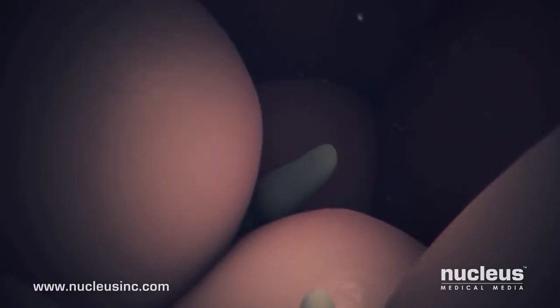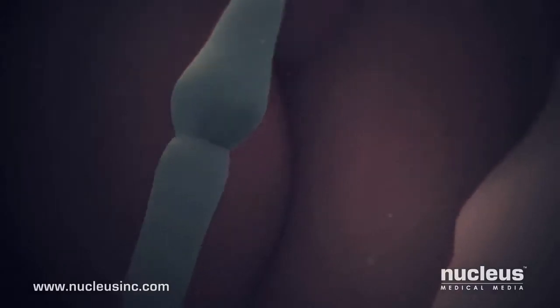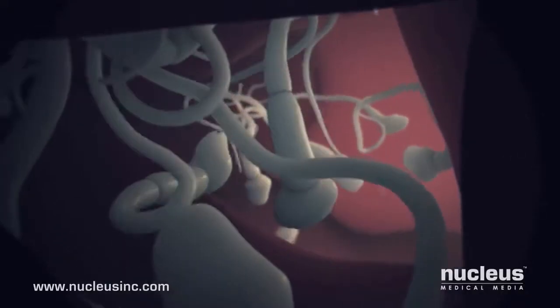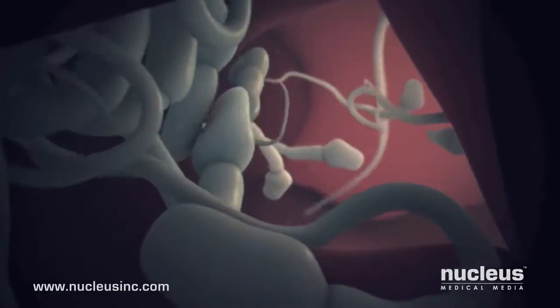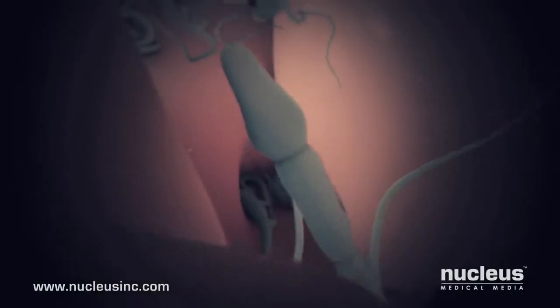Once inside the cervix, the sperm continue swimming toward the uterus, though millions will die trying to make it through the mucus. Some sperm remain behind, caught in the folds of the cervix, but they may later continue the journey as a backup to the first group.